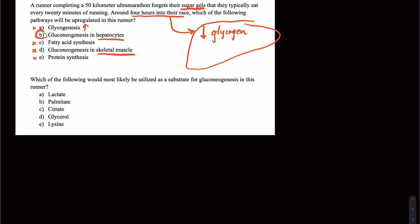And then this follow-up question, which of the following would most likely be utilized as a substrate for gluconeogenesis in this runner? So this runner is likely using up a lot of that glucose and running it through glycolysis. And even though they're probably doing largely aerobic exercise, there's going to be some cells that are probably a little bit oxygen-starved and creating lactate.